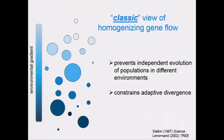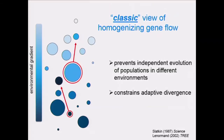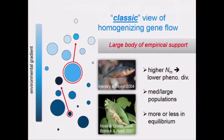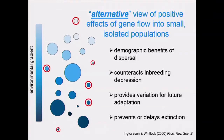The classic view of gene flow is that if populations are distributed along an environmental gradient and gene flow occurs from one environment to another, the introduction of maladaptive alleles will prevent independent evolution and act as a homogenizing constraint on adaptive divergence. There's a large body of empirical evidence supporting this view. However, the majority of these studies deal with relatively large, stable populations in more or less equilibrium conditions.